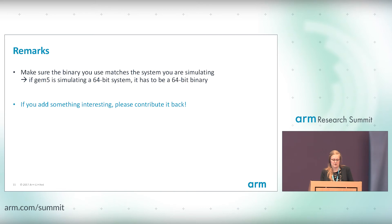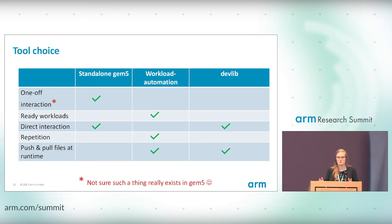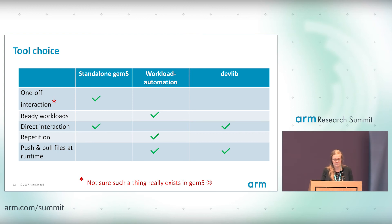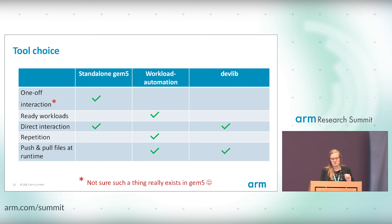As a summary — what do you choose when? If you want a one-off interaction with GEM5, just use GEM5 standalone, as it's not worth setting up WA and DevLib. If you want workloads that are ready to use, use WA. If you want to really interact with GEM5 at runtime, use standalone GEM5 or DevLib. If you want to repeat workloads, use WA. And if you want to change your run at runtime by pushing and pulling files, use WA and DevLib.